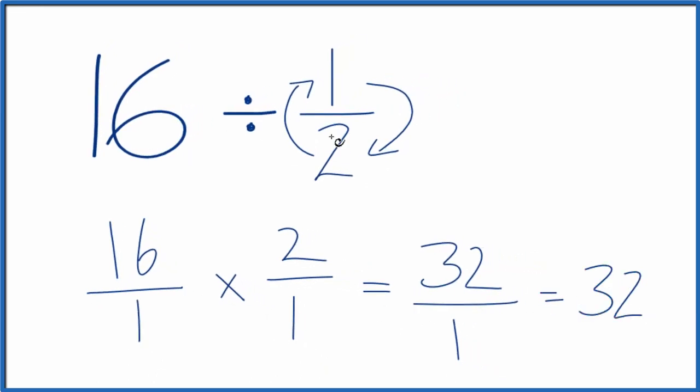So when we divide 16 by 1 half, we get 32. If you multiply 32 by 1 half, you'll get 16. So we did this part correctly.